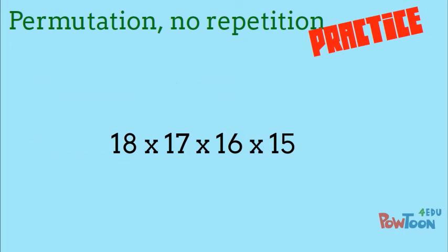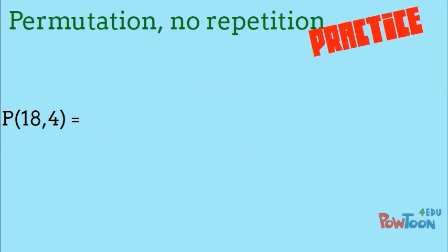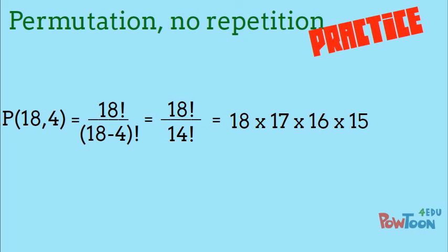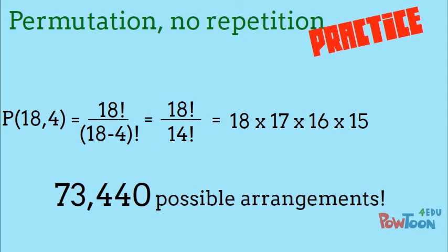We have 18 options for the first position on the shelf, then 17, 16, and 15. Using the formula, we need to calculate permutation 18 choose 4. That gives us 18 factorial divided by 18 minus 4 factorial, or 14 factorial. It simplifies to what we thought it would, 18 times 17 times 16 times 15, which equals 73,440 possible arrangements, an overwhelming amount.